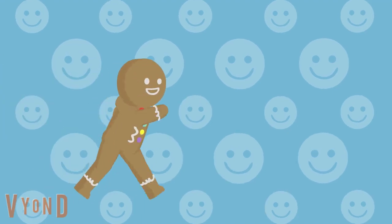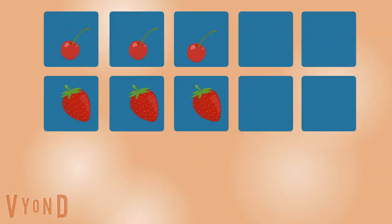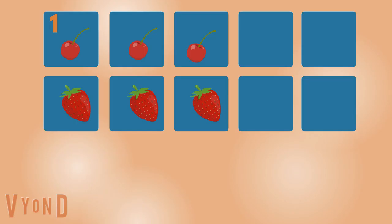Let's start. How many fruits are there? Cherry. One, two, three. Three cherries.